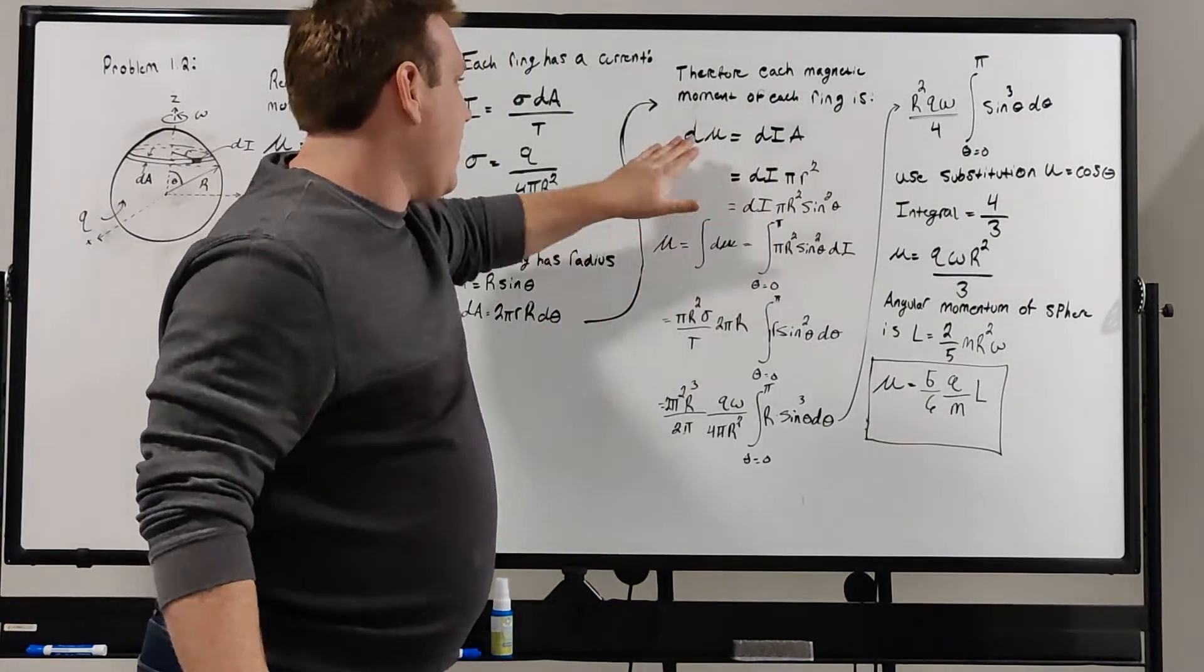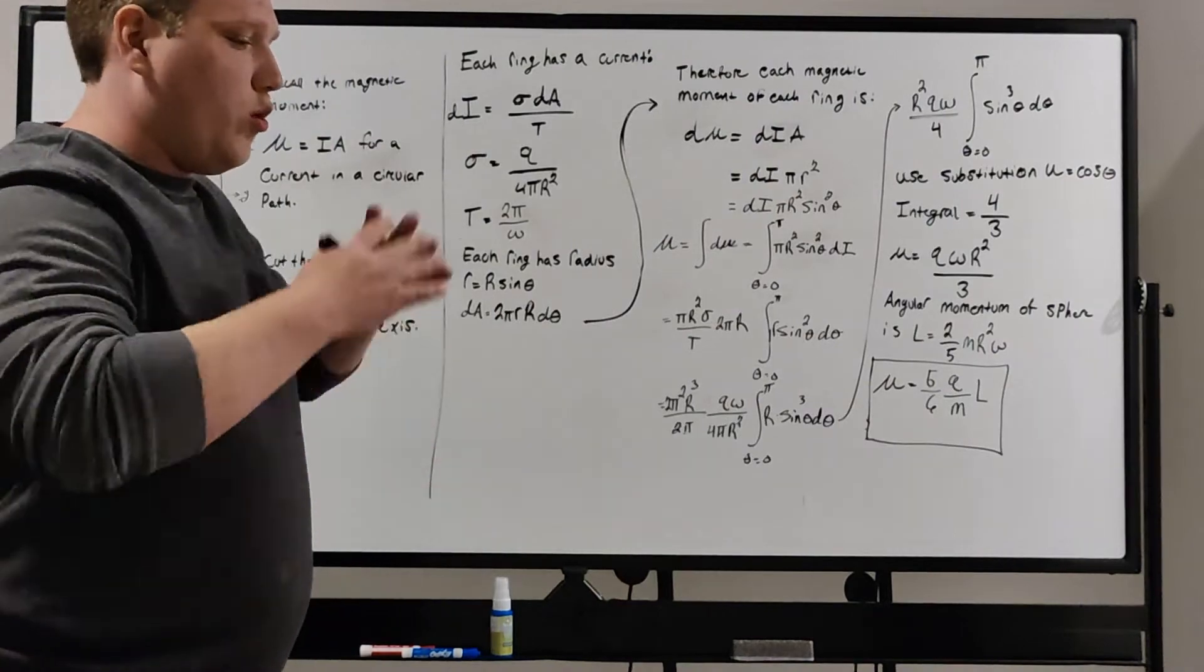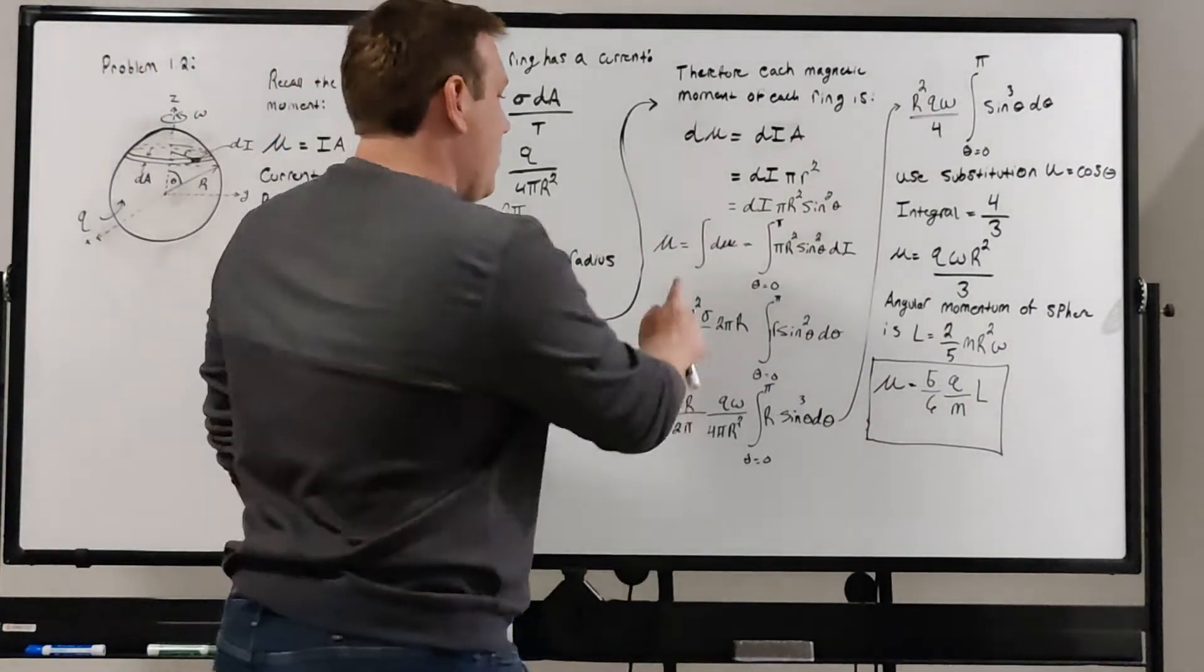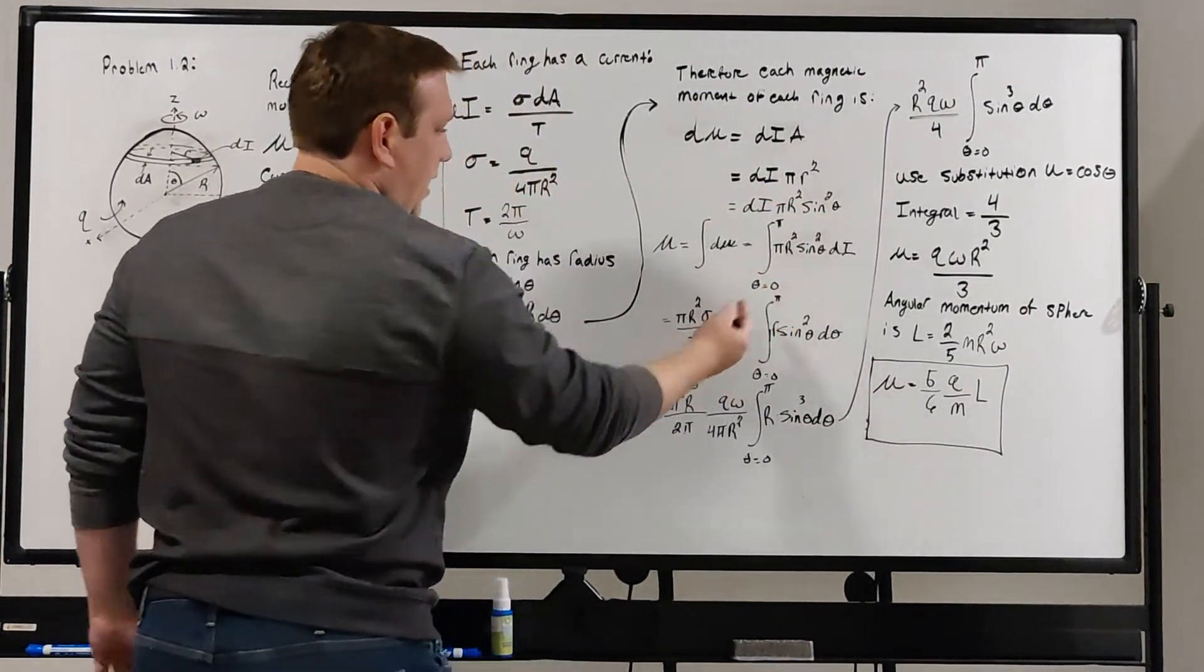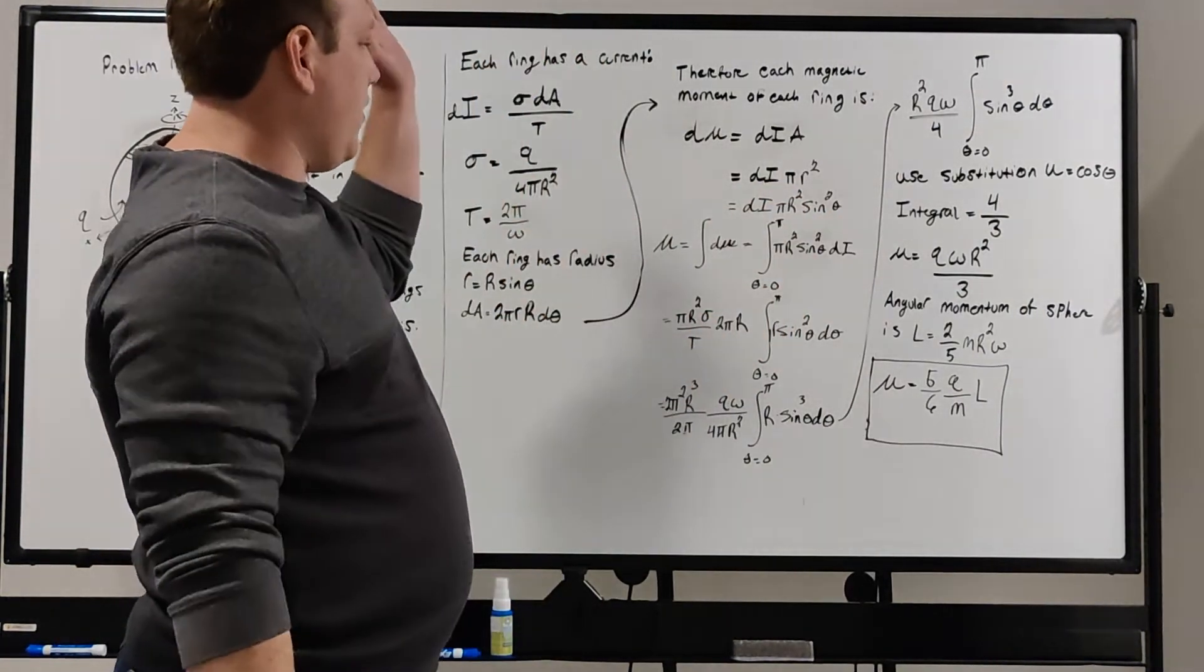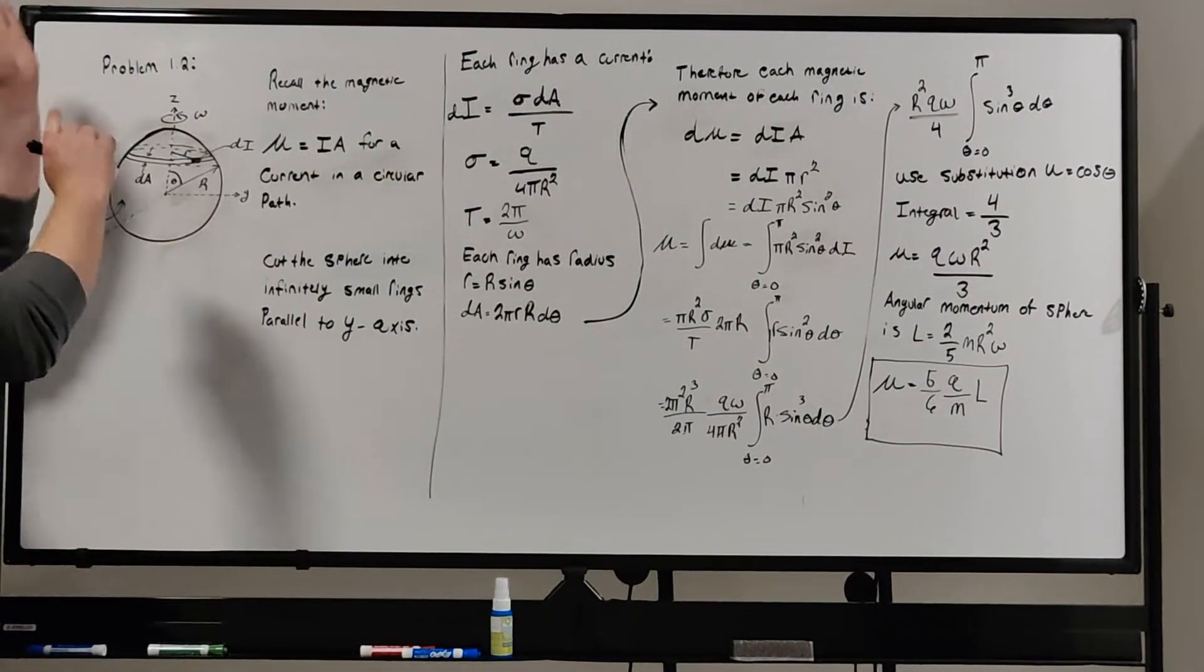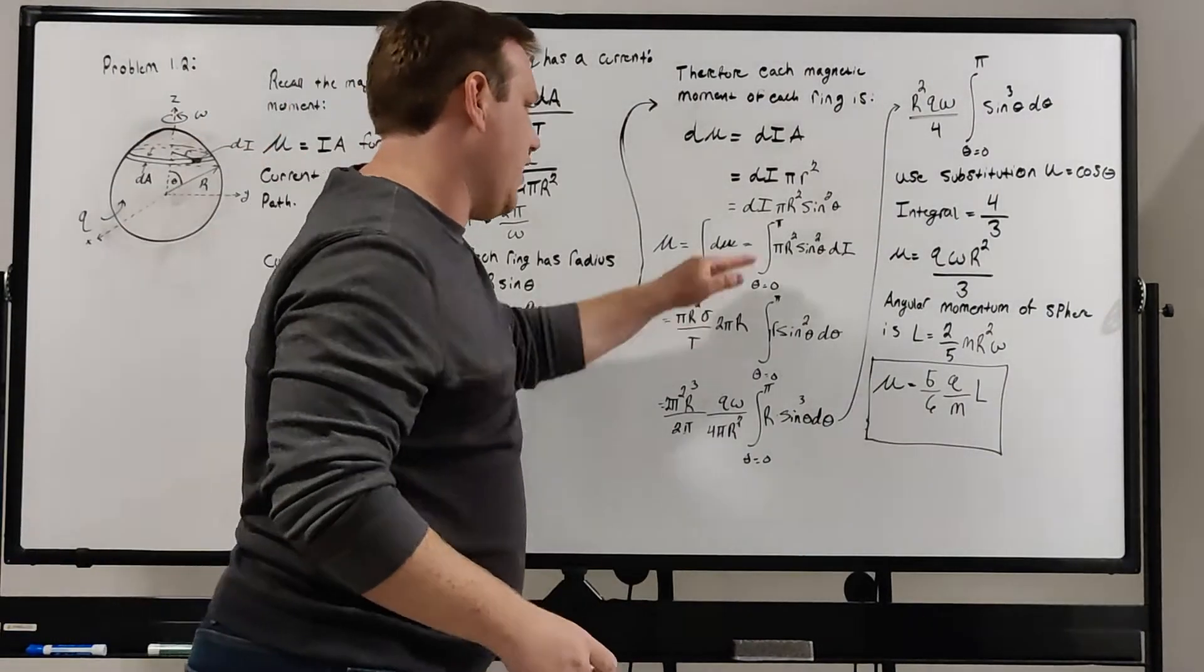We have this expression, which we can then integrate to get the total magnetic moment of the entire sphere. Doing this integral, plugging what we have in here, the bounds of integration go from theta equals zero to pi. Theta is the angle from the vertical axis down. That's our bounds of integration.